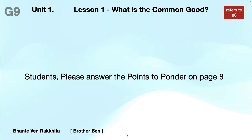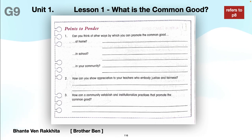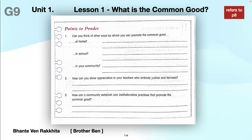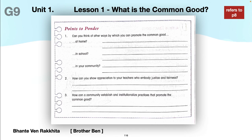Now we're over to page eight. Students, please answer the points to ponder on page eight. Can you think of other ways by which you can promote the common good at home, in school, in your community? You can write that question out and write the three responses into a text message. How can you show appreciation to your teachers who embody justice and fairness? And how can a community establish and institutionalize practices that promote the common good? You can pause this here while you copy those out.